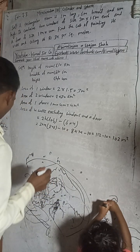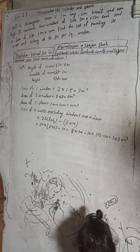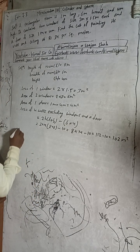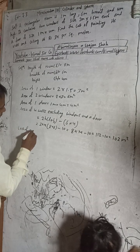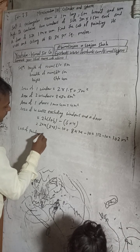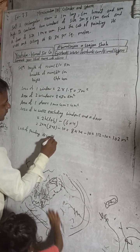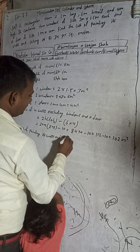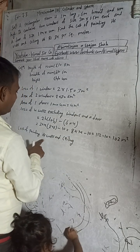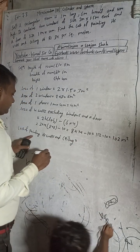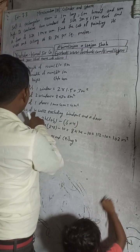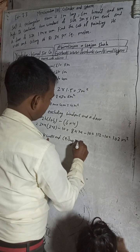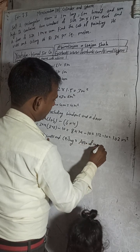This will be 102 meter square. Now the cost - find the cost of painting its walls and ceiling. Cost of painting walls and ceiling.